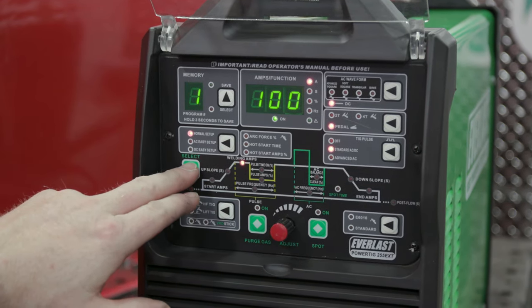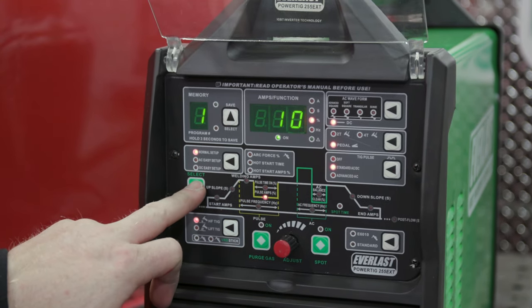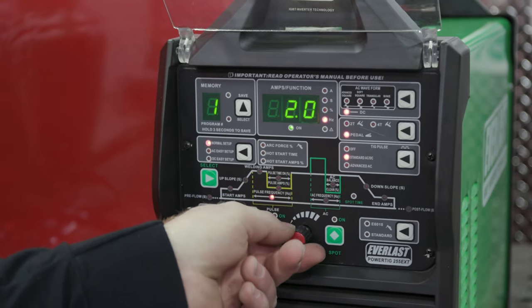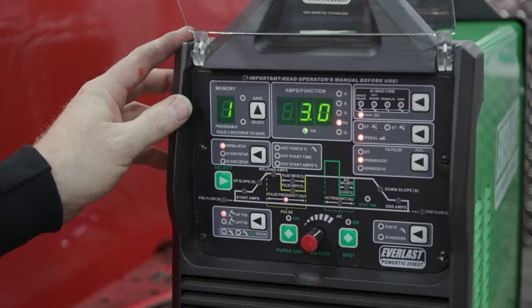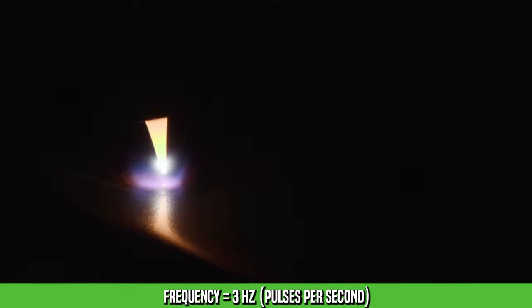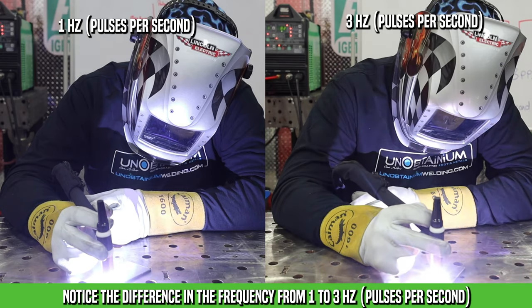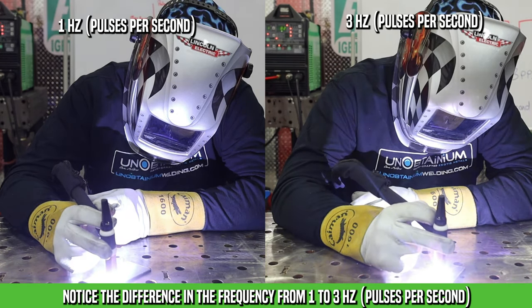So on the machine, we have to select. We're going to leave our pulse time and our pulse amps, but we're going to turn up this frequency to three pulses per second, and then we'll show you 10 pulses per second. So now we have three pulses per second, so we're going to be running that cycle three times as fast, and you'll see how it really tightens up the puddle.